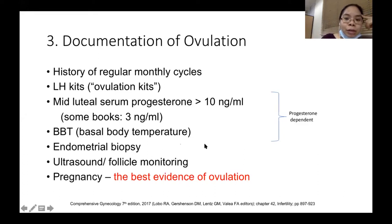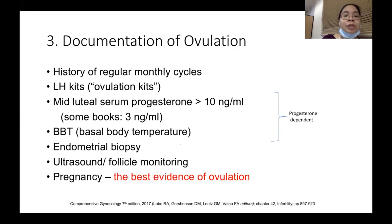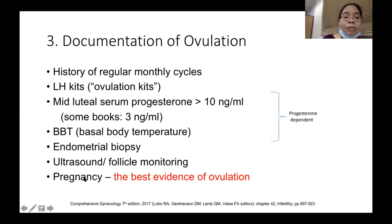Another way to document ovulation is by ultrasound follicle monitoring — looking for evidence of a mature follicle and then signs of corpus luteum. A history of pregnancy is the best evidence of ovulation.